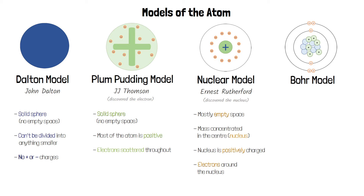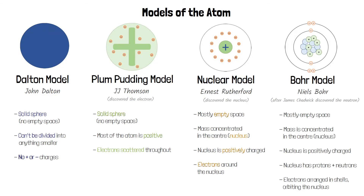The final model was the Bohr model. This was developed by Niels Bohr after James Chadwick discovered the neutron. Like the nuclear model this model is mostly empty space with the mass concentrated in the centre in the nucleus. The nucleus is still positively charged but this time it contains protons and neutrons. The electrons are still around the nucleus but this time they're arranged in shells and they orbit the nucleus.